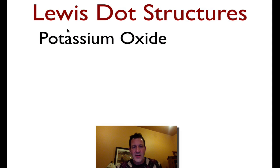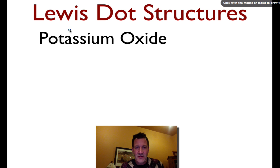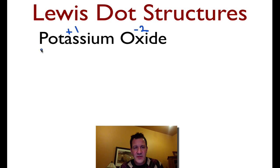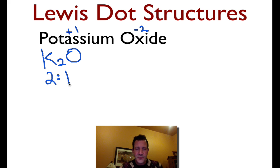Let's go on and draw some for some individual compounds. I think it's a good idea to go through this step by step. I like to start by writing out the chemical formula. We know these are ionic, and we can use the charges to come up with a chemical formula. We know this is potassium, and the chemical formula is K2O, and that tells us that the ratio of potassium to oxygen is going to be two to one.